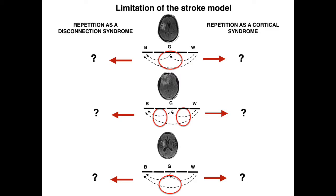One reason for the lack of consensus is that all the data was primarily based on stroke patients, and there are limitations to the stroke model. A stroke is hardly ever only cortical or only subcortical. On this schematic you can see Broca's area, Wernicke's area, and what's now called Geschwind's area, interconnected by the arcuate fasciculus. When you have a stroke to a cortical region, the white matter underneath is usually affected as well, making it hard to say whether the deficit is caused by white matter or cortical damage.